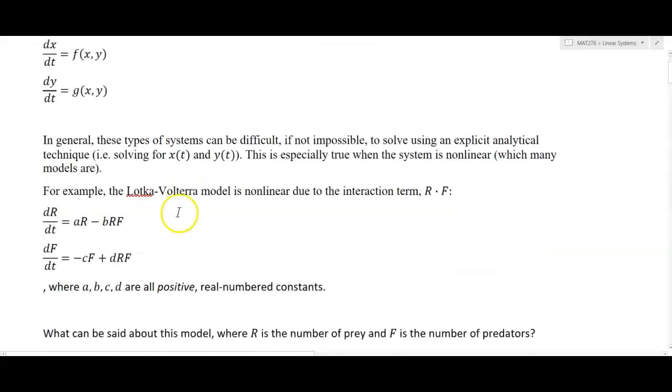For example, the Lotka-Volterra model, which is used to model predator-prey relationships, is nonlinear due to the interaction term R times F. This model seems realistic where R represents the prey and F represents the predator, think rabbits and foxes. dR/dt equals AR minus BRF, dF/dt equals negative CF plus DRF, where A, B, C, D are all positive real numbered constants. The parameters A, B, C, D are positive numbers themselves with negative signs placed where needed.